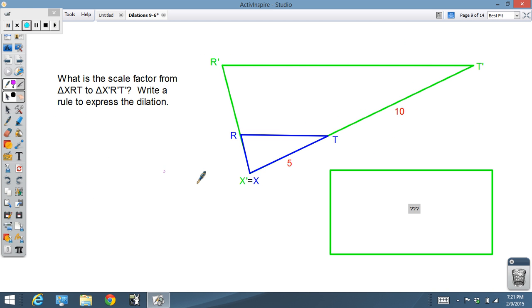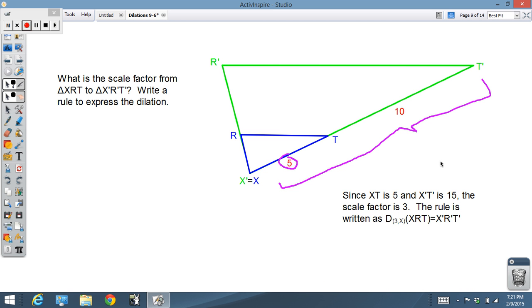This is how we're going to look at problems like this. What is the scale factor now from triangle XRT to XR prime T prime? Be a little careful with this. Notice that XT is 5, but XT prime is 15. Therefore, our scale factor, even though it looks like we want to put 2 there, our scale factor is actually 3. And we can write the rule: this is a dilation by a factor of 3 around point X, that's our center.